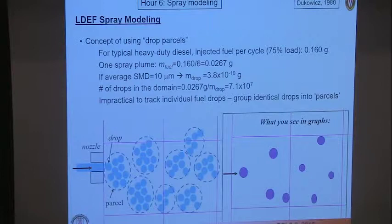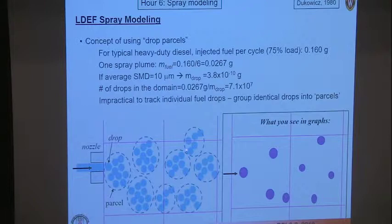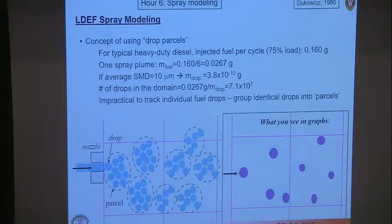70 million drops is way too many to track. But if you consider parcels of 100 or 1,000 droplets that statistically represent your overall spray, you can reduce this down to a simulation involving thousands of particles instead of millions, and rely on statistics to show it's similar to the original spray. That's the approach of drop parcels.